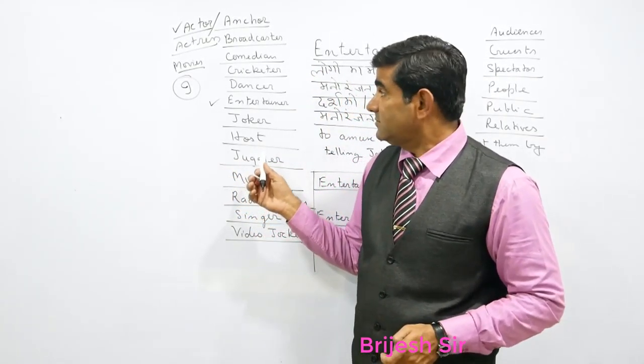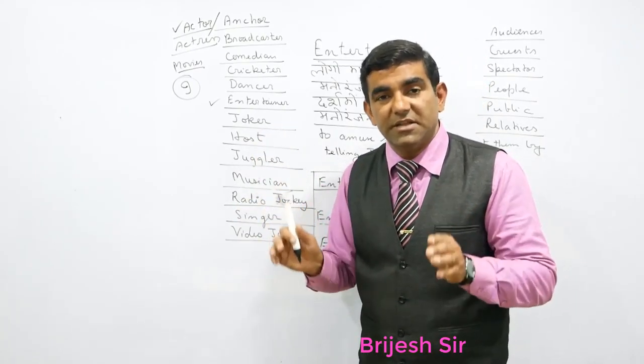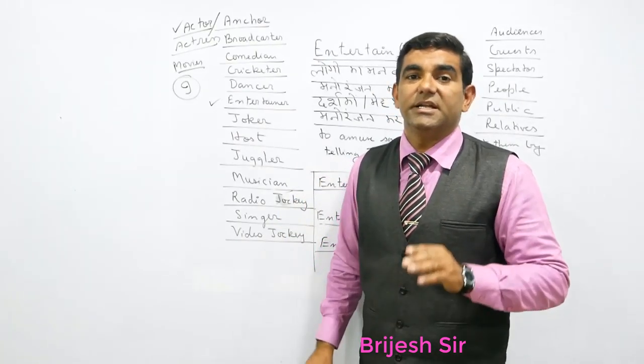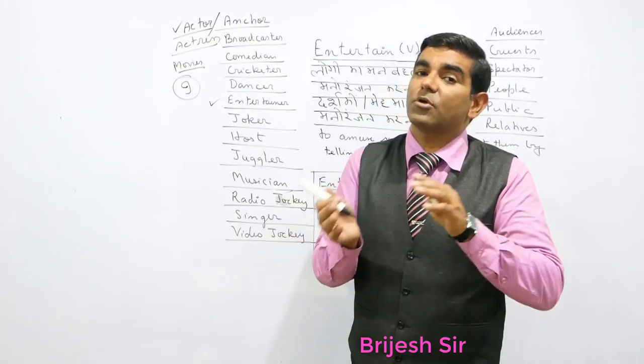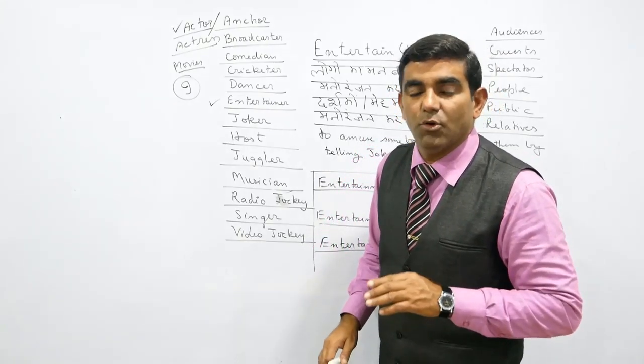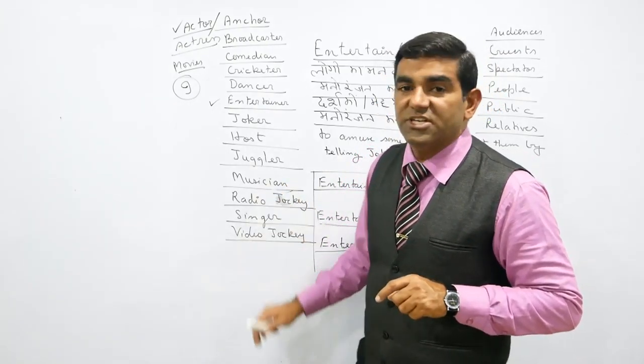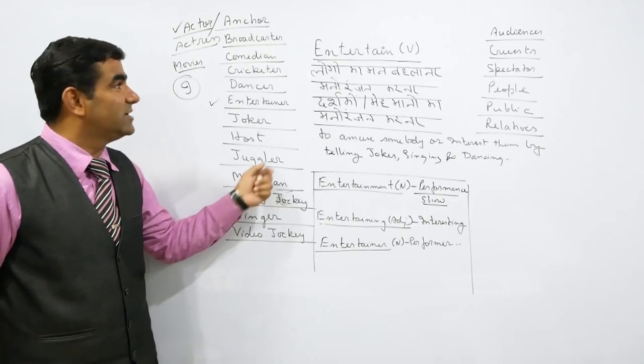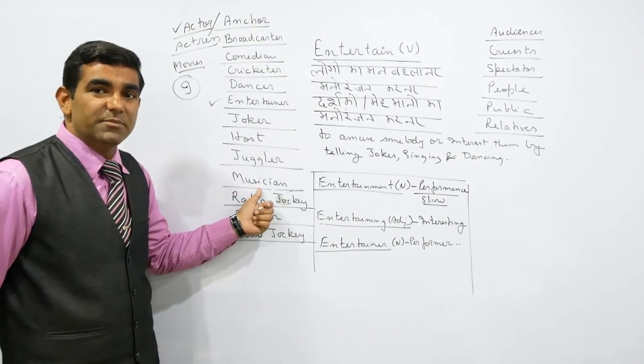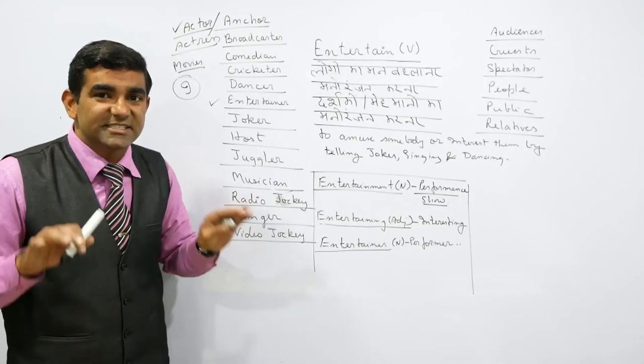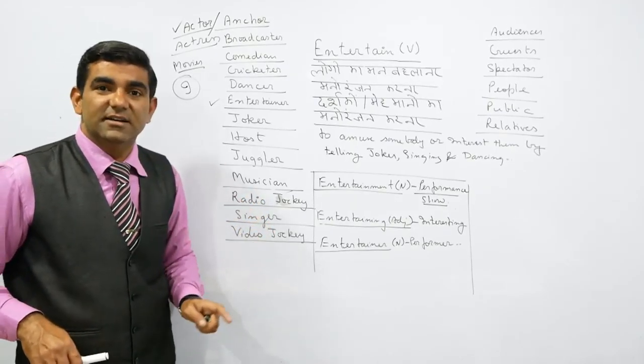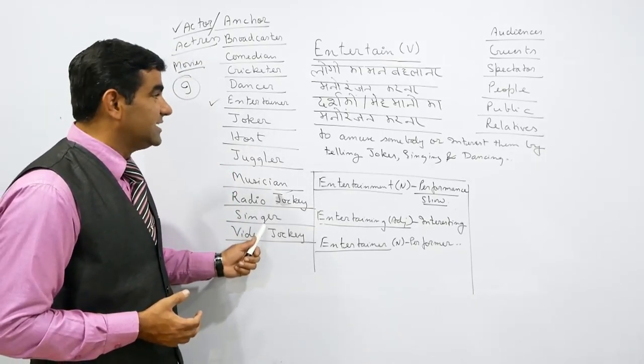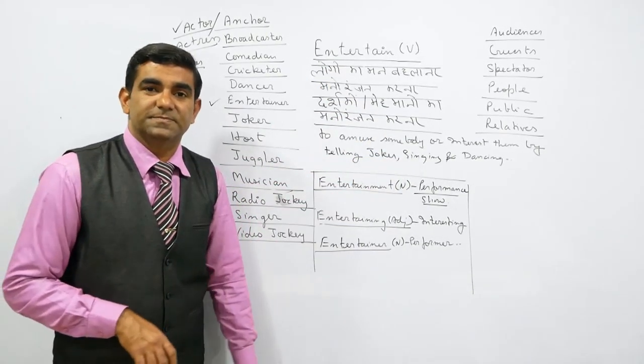Kapil Sharma is the best entertainer on TV shows or TV programs. Juggler means madari who entertains people on the roadside. Musician, if they play music and entertain people, we call them musician. Singer entertains.